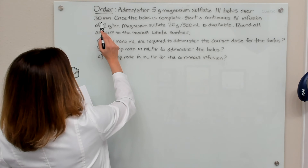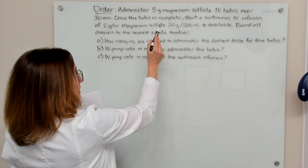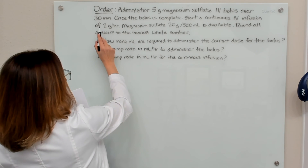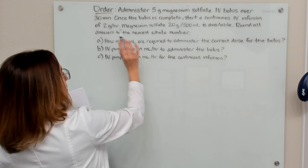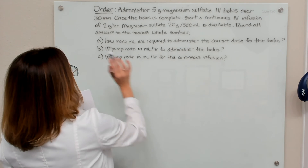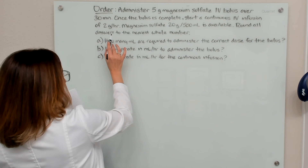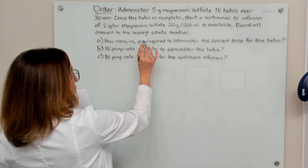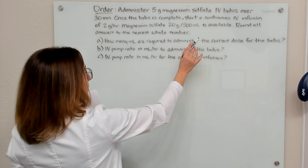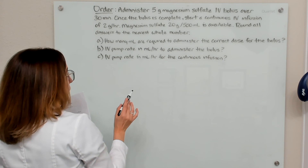With this problem, we have an order to administer five grams of magnesium sulfate IV bolus over 30 minutes. Once the bolus is complete, we need to start a continuous IV infusion at 2 grams per hour. Magnesium sulfate 20 grams in 500 mL is available. We need to round all of our answers to the nearest full number.